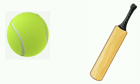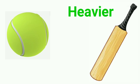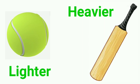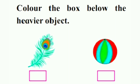Can you tell me which object is heavier and which one is lighter? On the right side we have a bat, and a bat is heavy in weight. On the left side we have a ball, and the ball is lighter in weight. So we will write 'heavier' near the bat and 'lighter' near the ball.